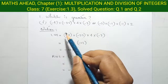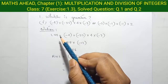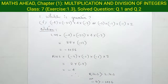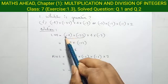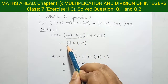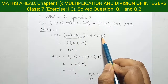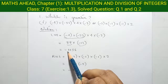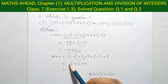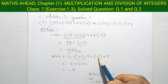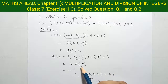Therefore, at first we will solve the left hand side part and then the right hand side part, after that we are able to find which one is greater and which one is smaller. Minus 4 into minus 22 equals plus 88. Again, 4 into minus 3 equals minus 12. 88 into minus 12 equals minus 1056. Then 2 into minus 1: minus and minus became plus, 2 into 1 equal to 2. Again, minus 1 into minus 2 equal to plus 2, and finally 2 into 2 equal to 4.